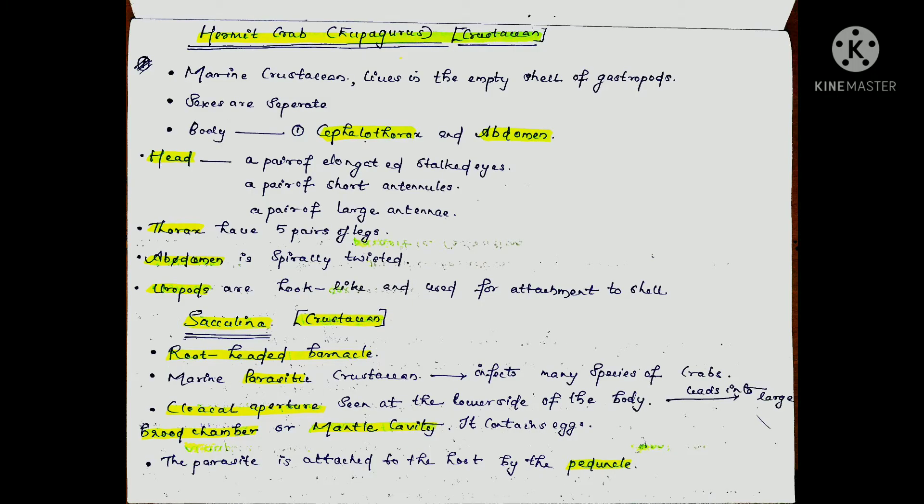The hermit crab is a marine crustacean which lives in the empty shell of gastropods. Their sexes are separated.